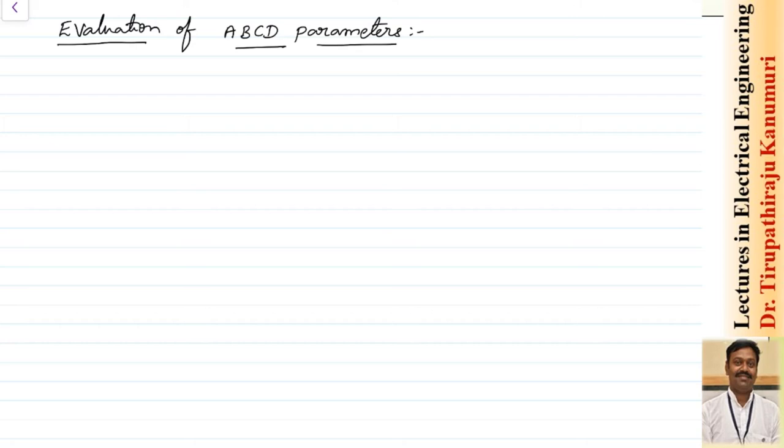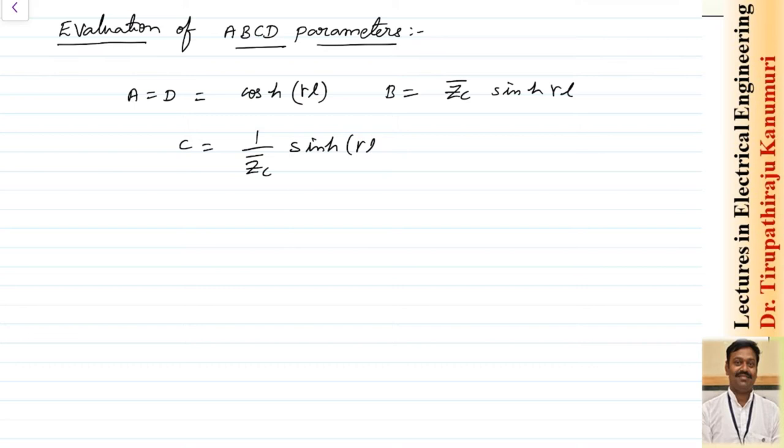We have seen in the last class that the value of A is equal to D, which equals cosh(γl), and B is equal to Zc into sinh(γl), and C is equal to 1/Zc into sinh(γl).